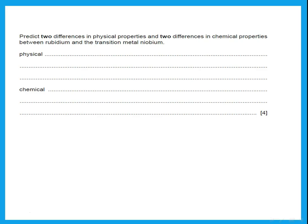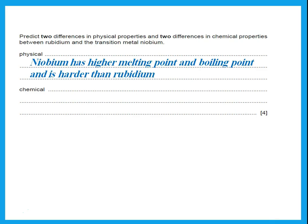Predict two differences in physical properties and two differences in chemical properties between rubidium and a transition metal, which we chose Niobium. So two different physical properties and two different chemical properties. Now when we're talking about physical properties, remember, what do we talk about? We talk about melting point, harder with density. So if I'm comparing Niobium, which is transition to something in group 1, rubidium is in group 1, then Niobium, the transition, will have higher melting point. Remember melting point and boiling point is just one mark.